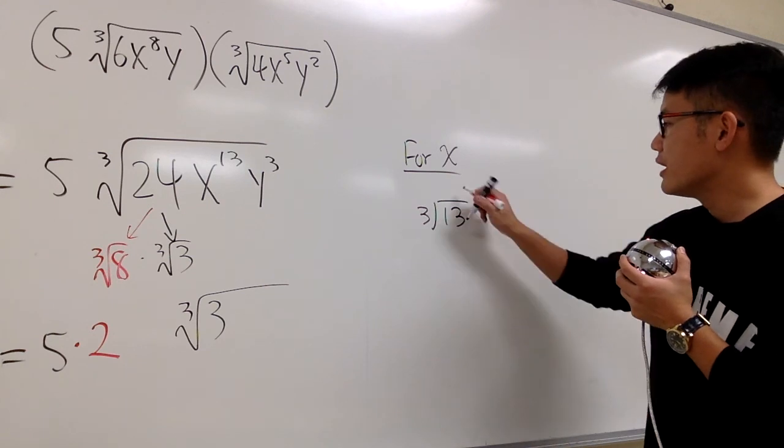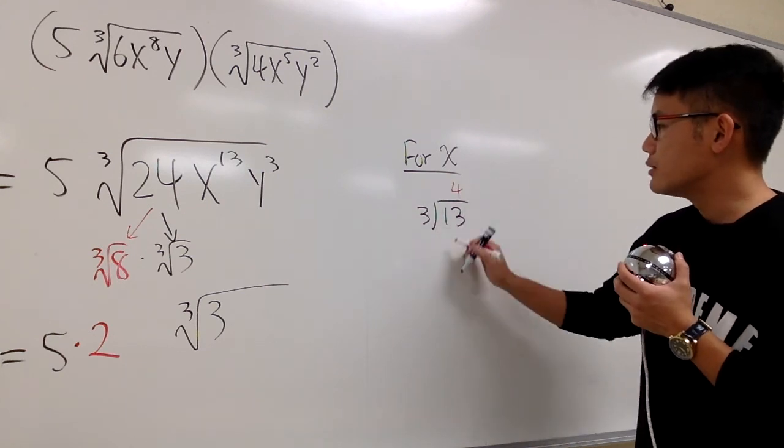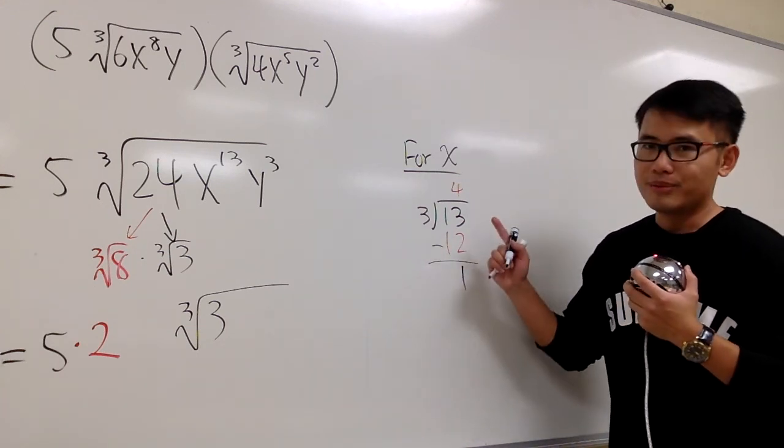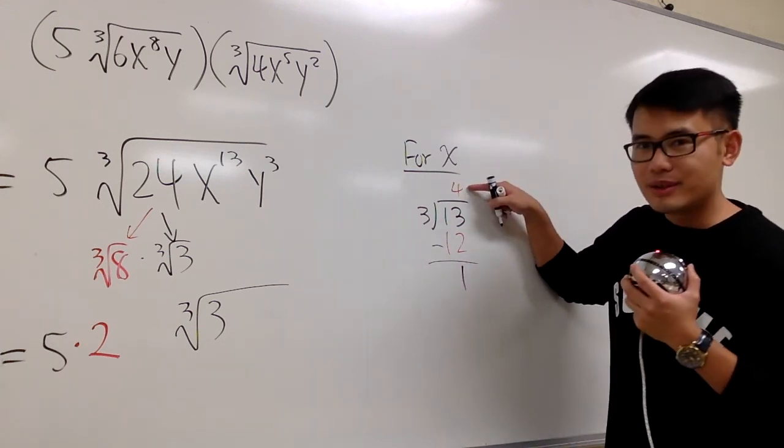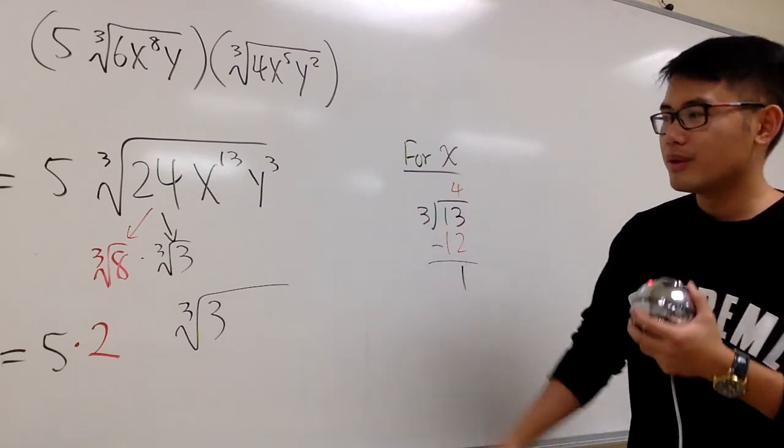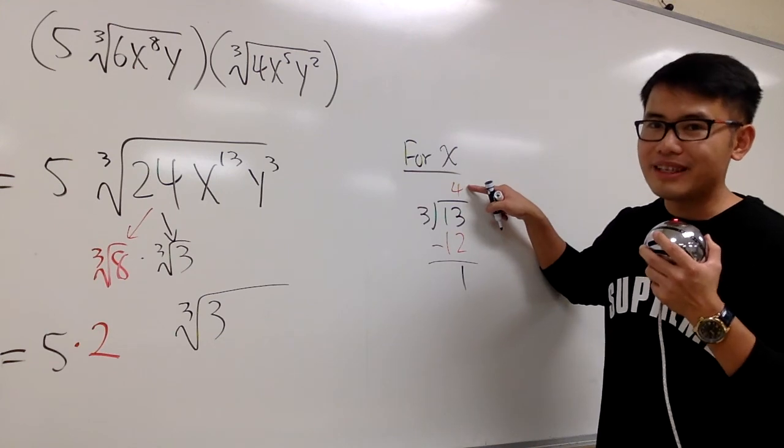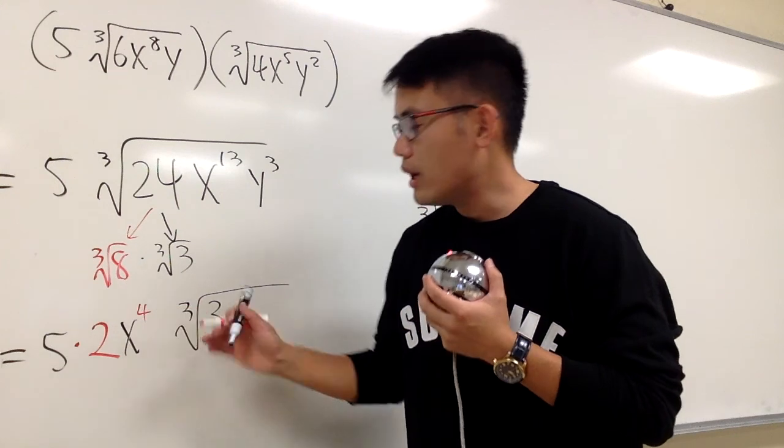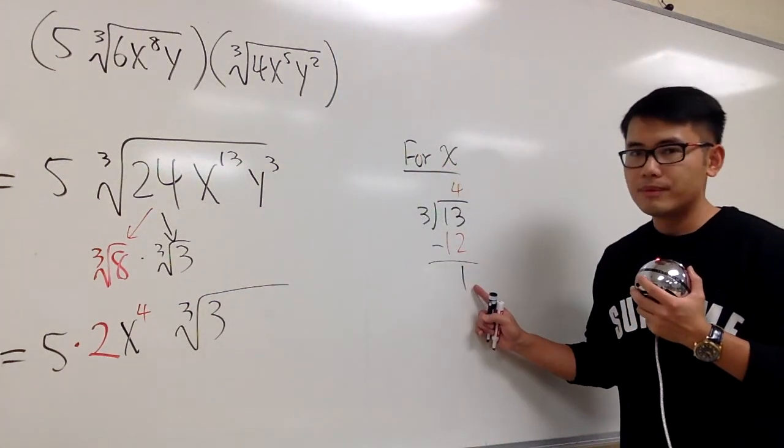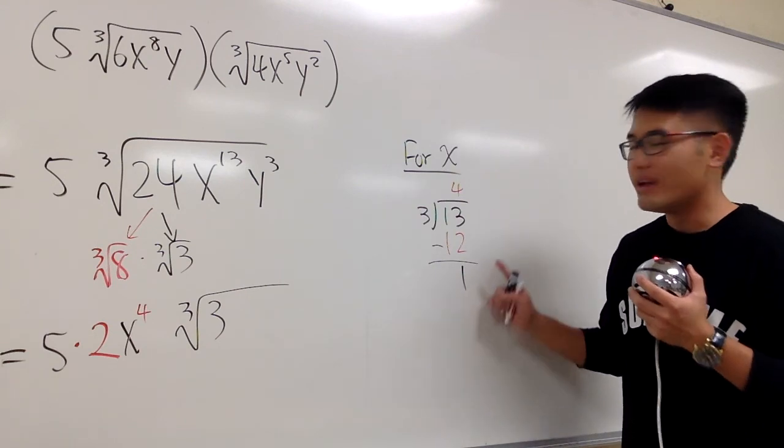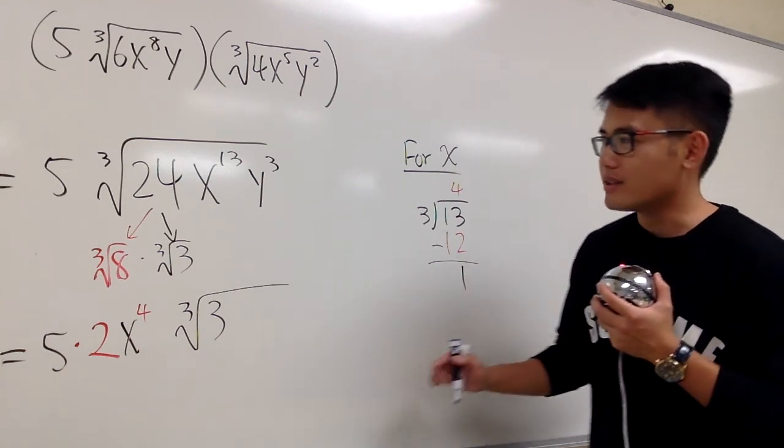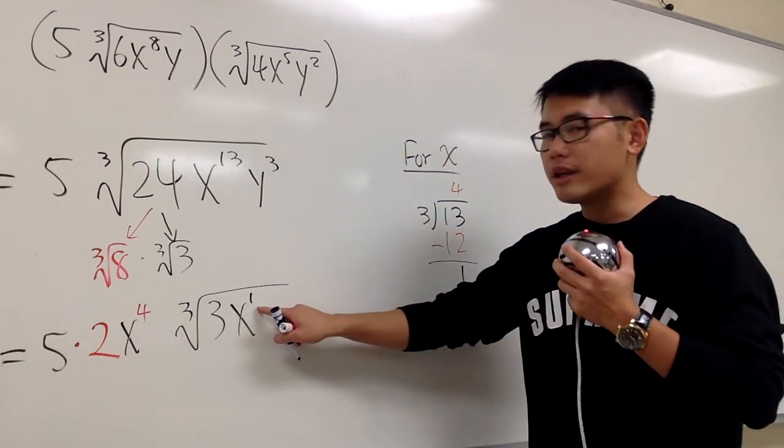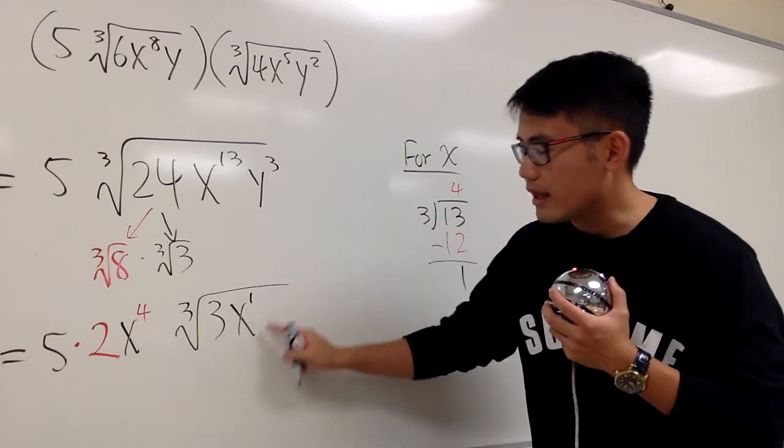3 goes into 13 at most 4 times. 4 times 3 is 12, subtract, and we have 1 left. This is important because this 4 is going to tell us how many x we can take out. We will have x to the 4th power on the outside. This 1 is the remainder, and this should remind you, we have one more x remaining inside. Inside here we have x to the 1st power. If this was a 2, you would have x squared inside.